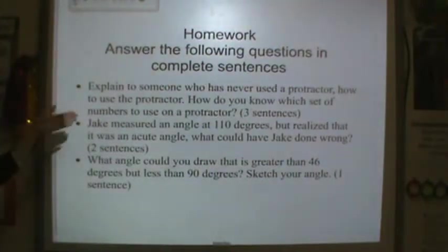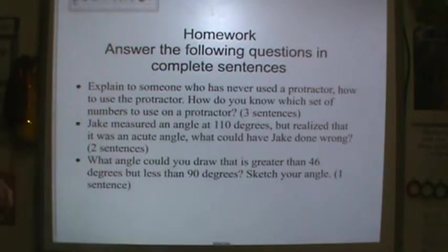For homework, I want you to think about this. Explain to someone who has never used a protractor how to use it. If Jake measured an angle at 110 degrees but realized it was an acute angle, what could he have done wrong? Please look back at the picture of the protractor. What angle could you draw that's greater than 46 degrees and less than 90 degrees? Sketch it.